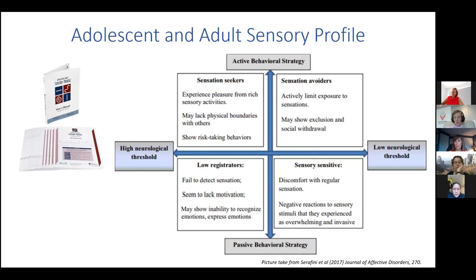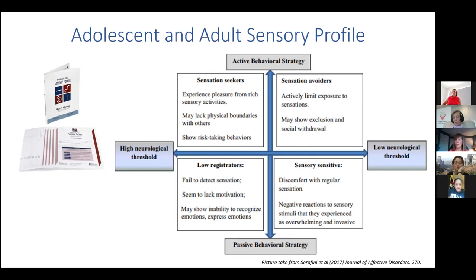Each person completing their sensory profile is identified across four patterns. Sensory seeking describes people who get pleasure from a rich sensory environment — they're cranking the music, having a dance party. Sensory avoiding describes people who limit exposure to sensory information, which may result in social withdrawal. Then there's low registration — it takes a lot of sensory input to organize and focus — and sensory sensitive, where you're reacting very quickly to stimuli.